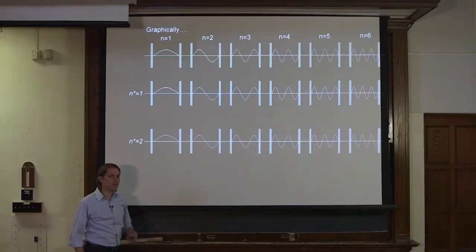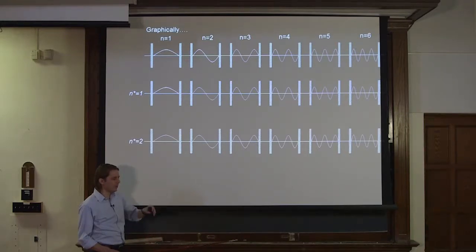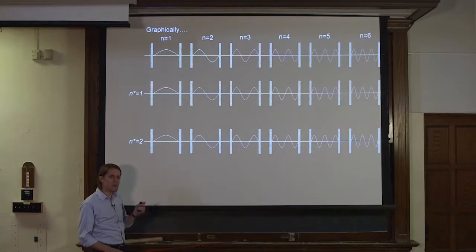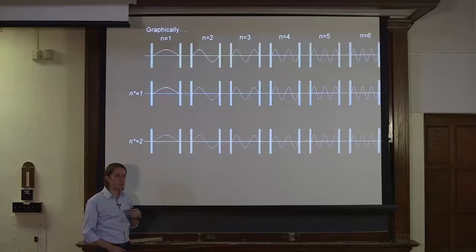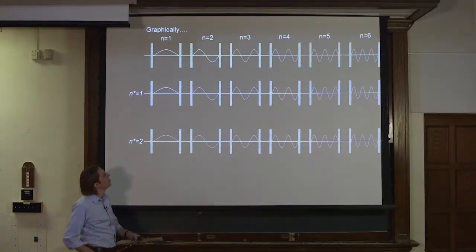We showed mathematically that Joe Fourier's idea works. If you multiply by the nth harmonic and integrate, the only term in the infinite series that stays is where n equals n star. But if you're a visual learner, I want to show it to you graphically why this happens.